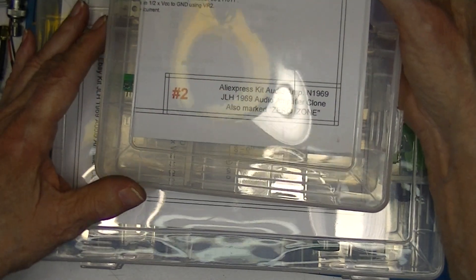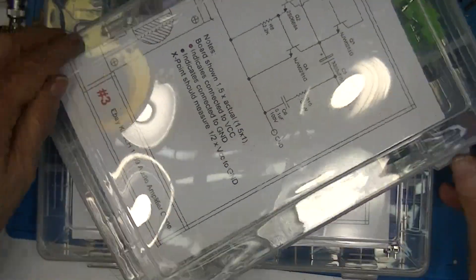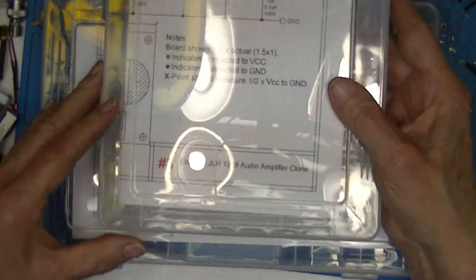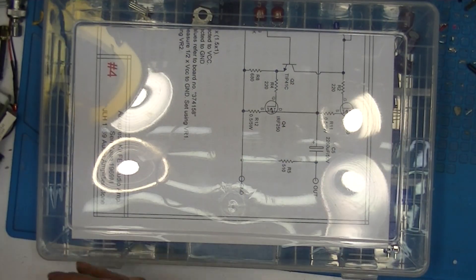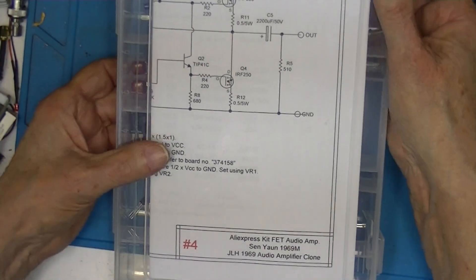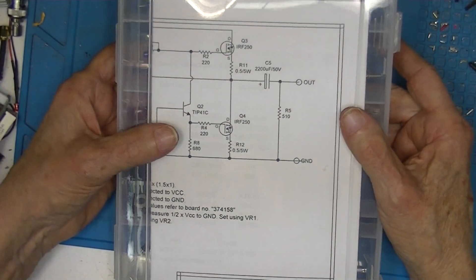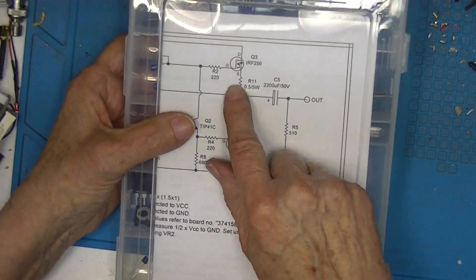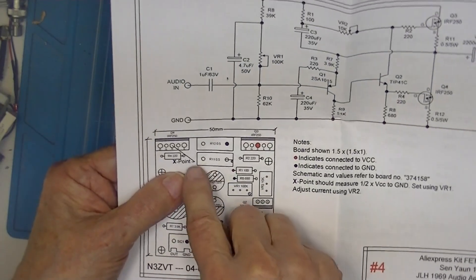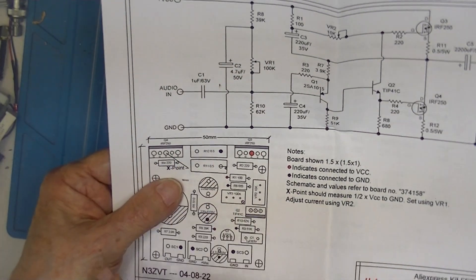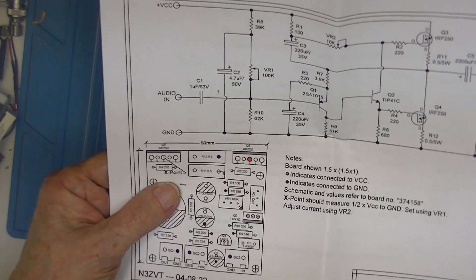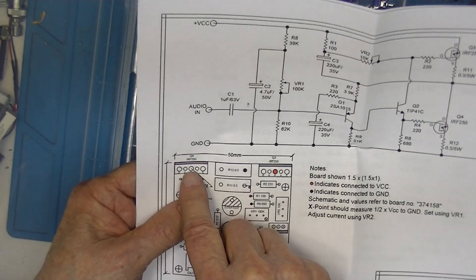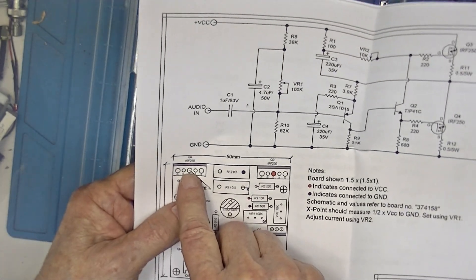I have the same thing for amplifiers two, three, and four. Four is a little bit different in that the two third-stage devices are both field effect transistors. I'll show you what I mean by the X point. Remember, on the John Lindsey Hood drawing, the X point was here. Physically, it's located here on the circuit board.